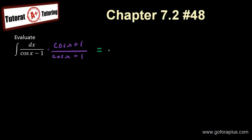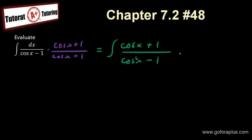So what does it give you? This gives me the integral of (cos x + 1) on top, and at the bottom is cos²x minus 1, because that's the difference of squares. If you multiply this out — this times that, this times that — then you get cos²x minus 1.